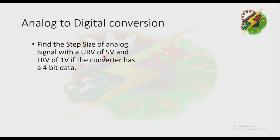Let's have another exercise: find the step value of an analog signal with a URV of 5 volts and LRV of 1 volt, if the converter has 4-bit data. Please pause this video and try to solve it by yourself.